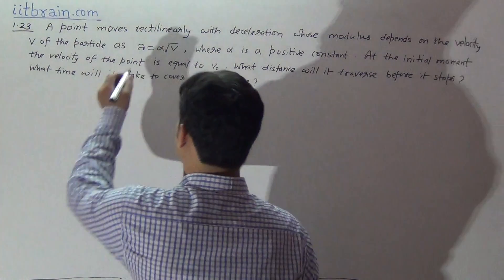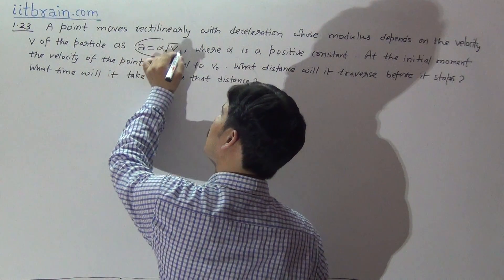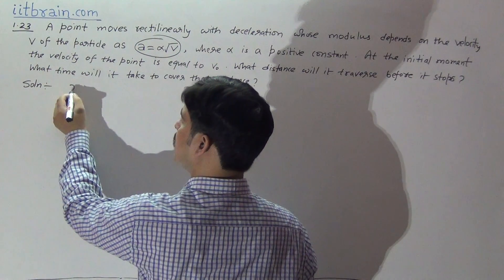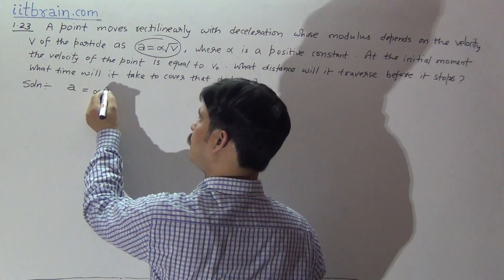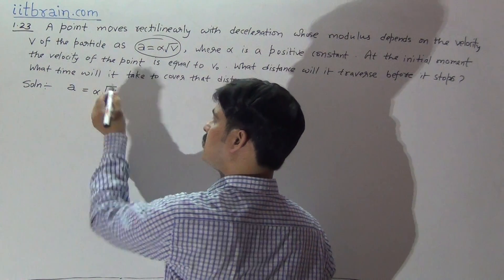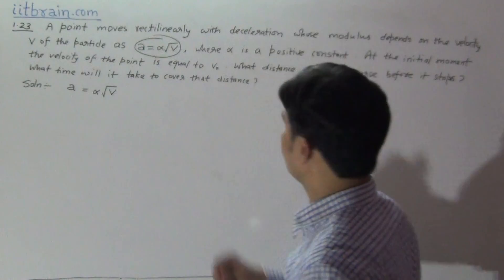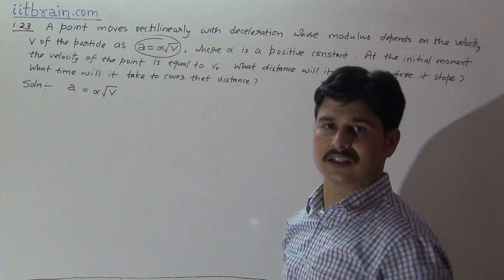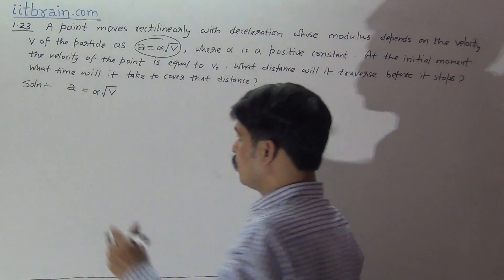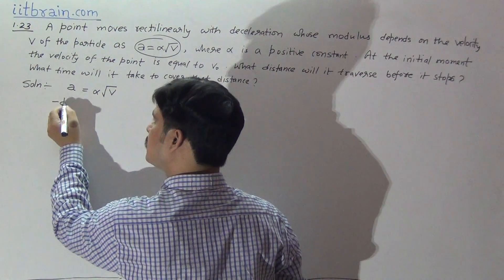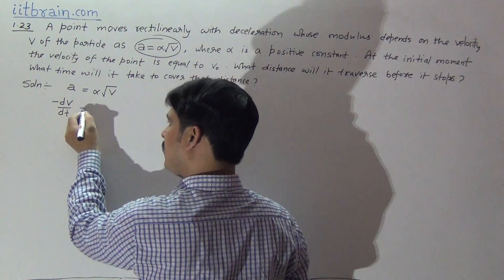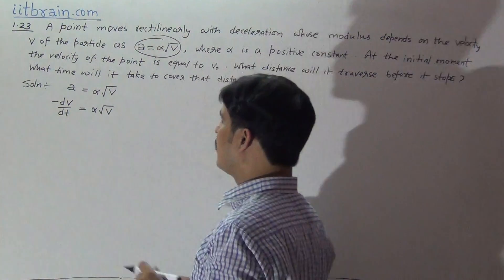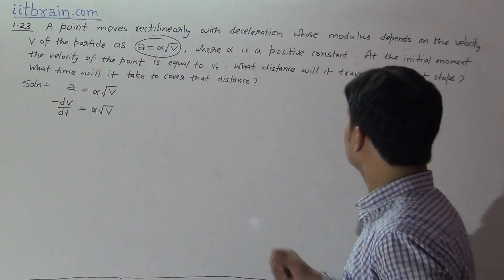This is the problem and there is a relation between a and v. This relation is a equal to alpha root v, where a is the deceleration and v is velocity. Since a is deceleration, you should write it as minus dv by dt, and in this manner minus dv by dt will become alpha root v.